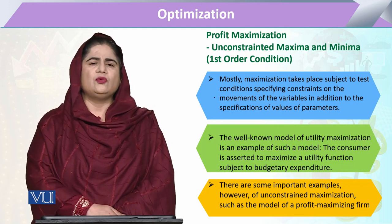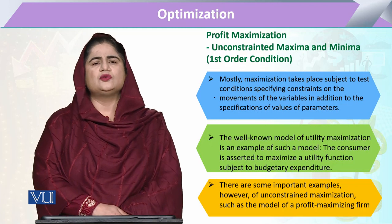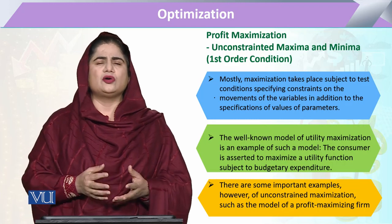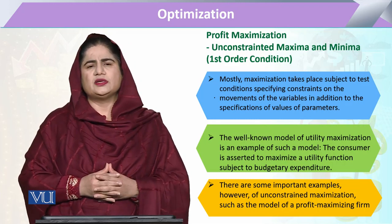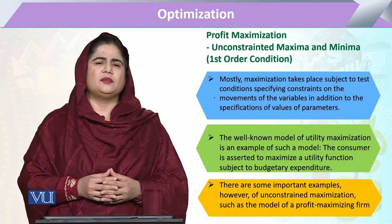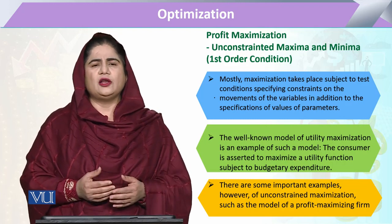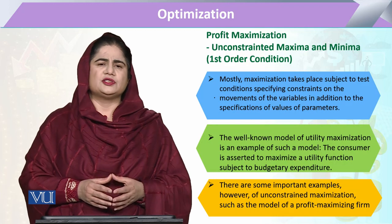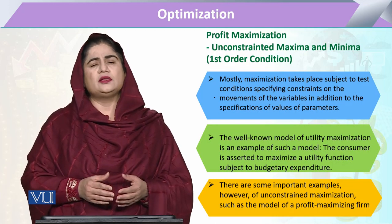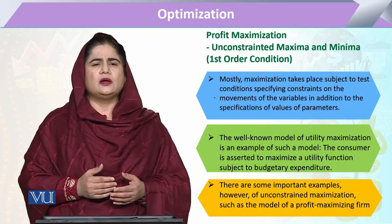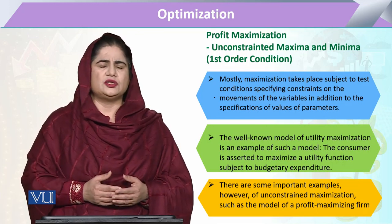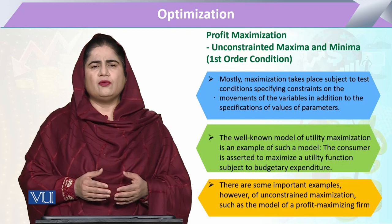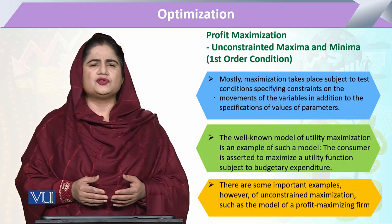As we have already studied, when we study various functions and want to optimize them, we mostly utilize certain conditions or constraints. Those constraints are related to certain variables and we take their values or parameters. In that form, we say the function is going to be optimized — either maximized or minimized — subject to certain conditions. When those conditions are available, that function will be called constrained maxima or constrained minima.